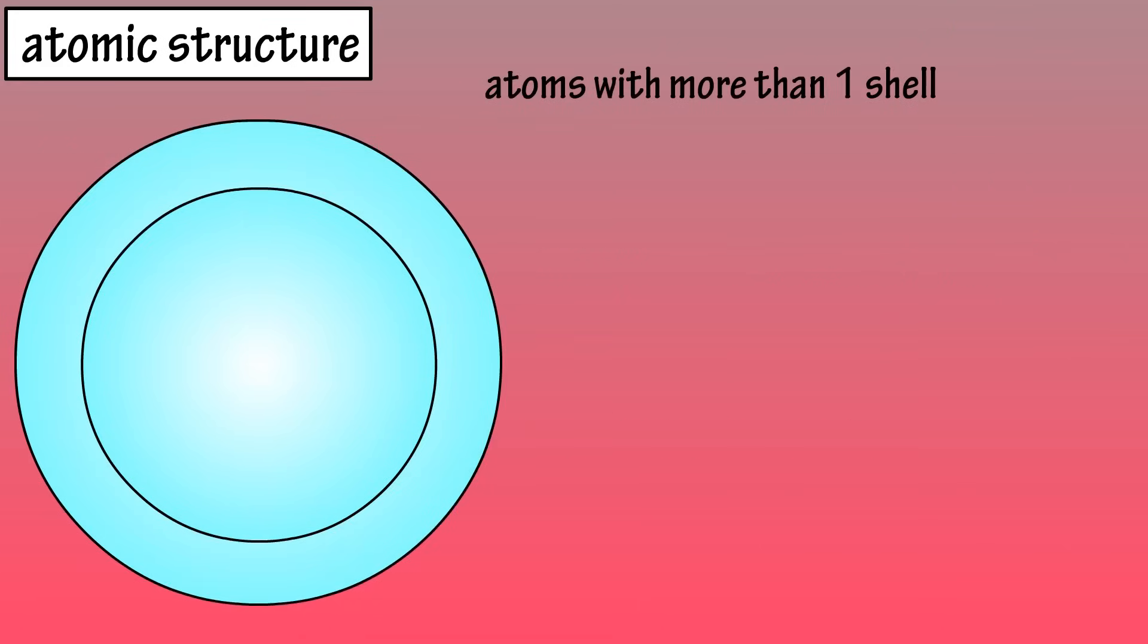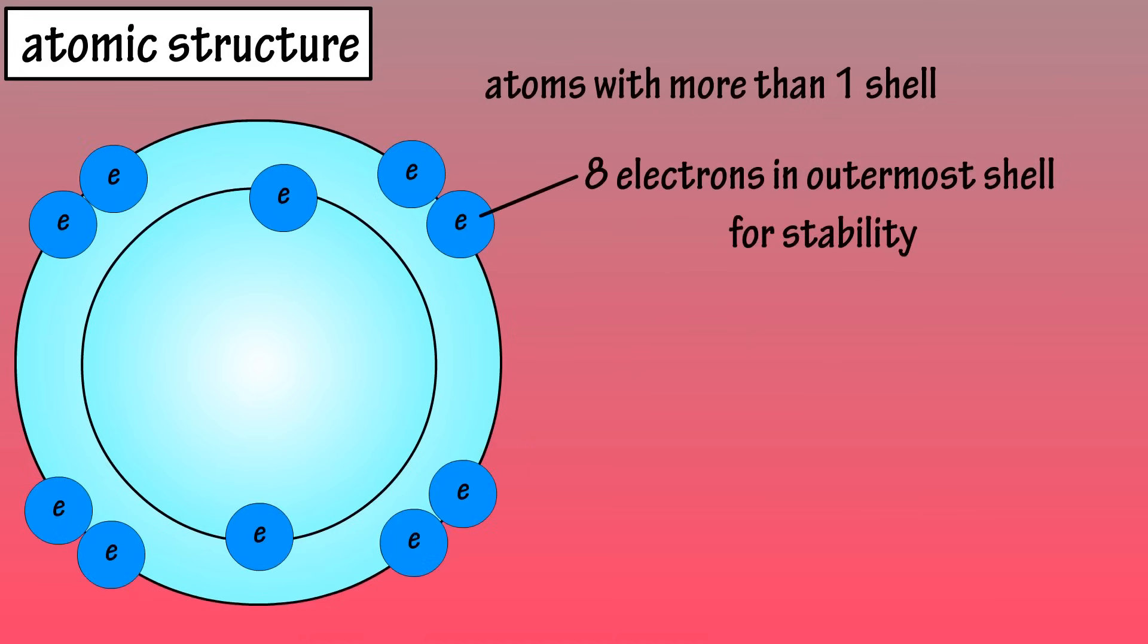In atoms with more than one energy level or shell, 8 electrons are required in its outermost shell for stability. So neon, which has 8 electrons in its outermost shell, is stable.